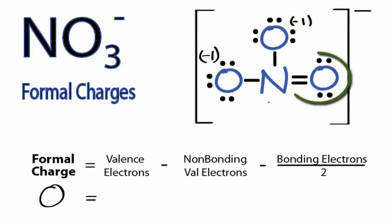Let's do the oxygen with the double bond now. So oxygen again on the periodic table, 6 valence electrons. Non-bonding, we have 2, 4 non-bonding valence electrons.